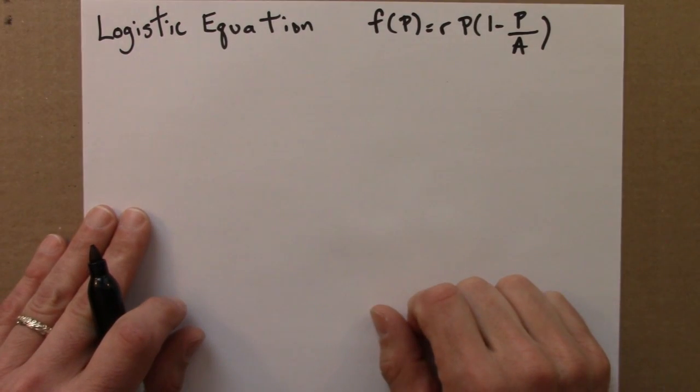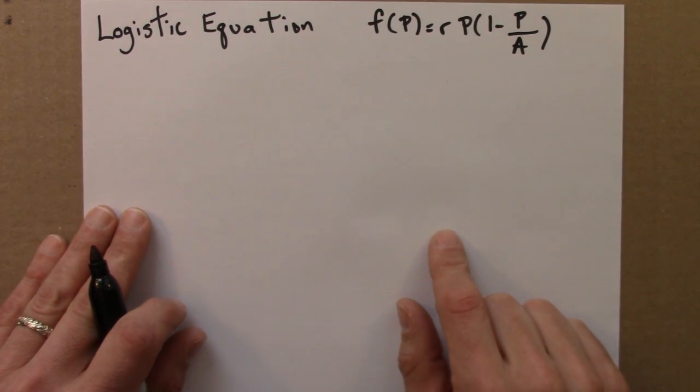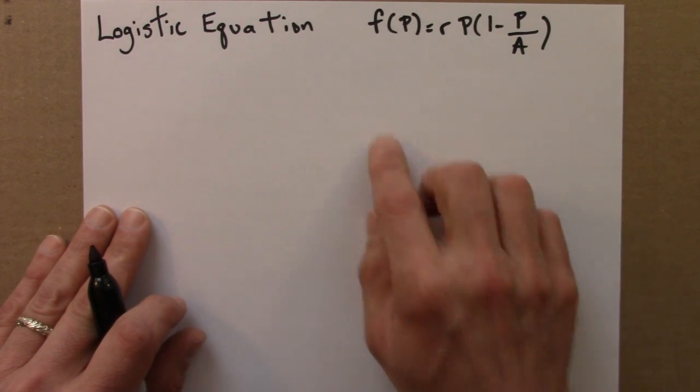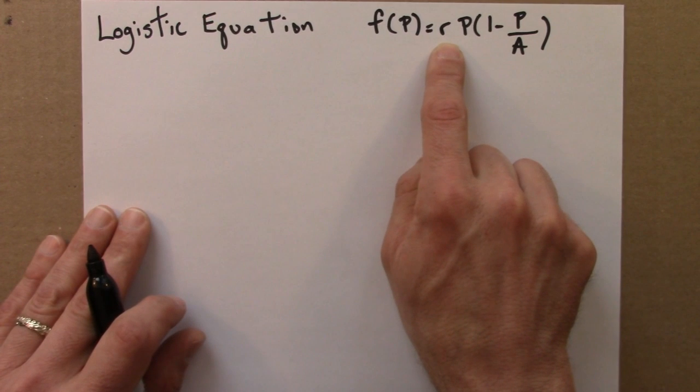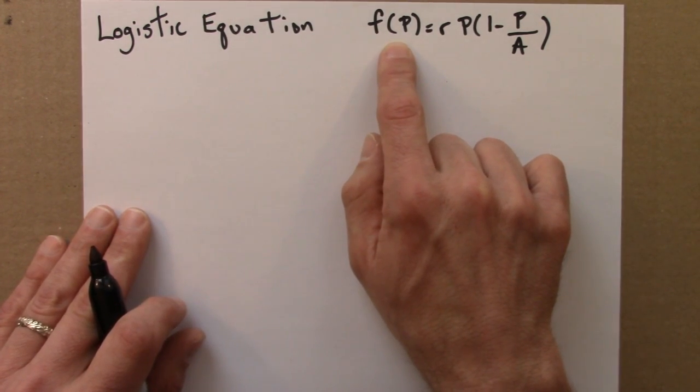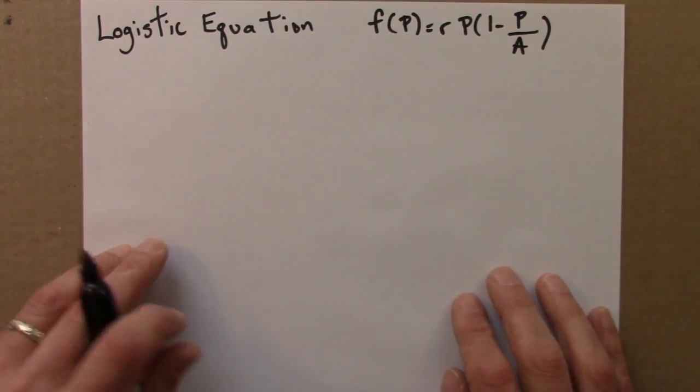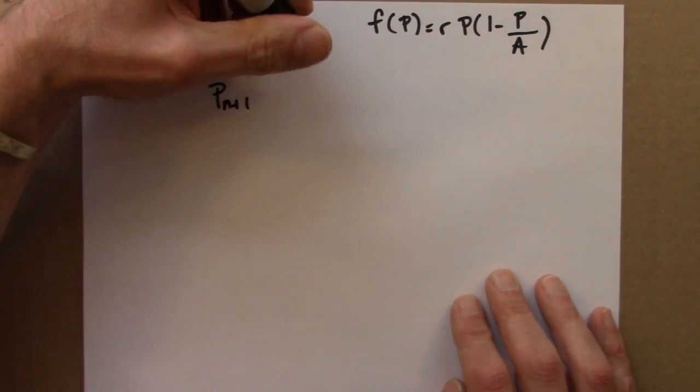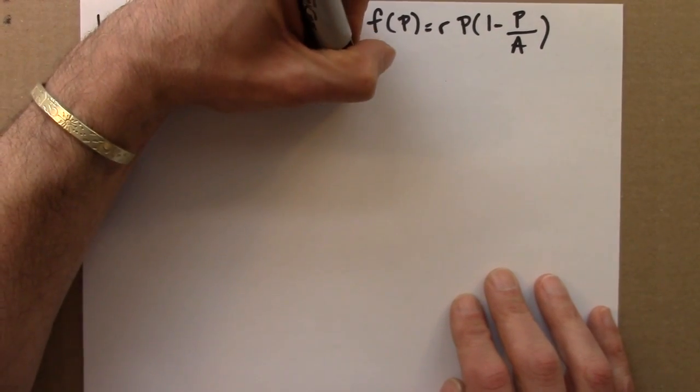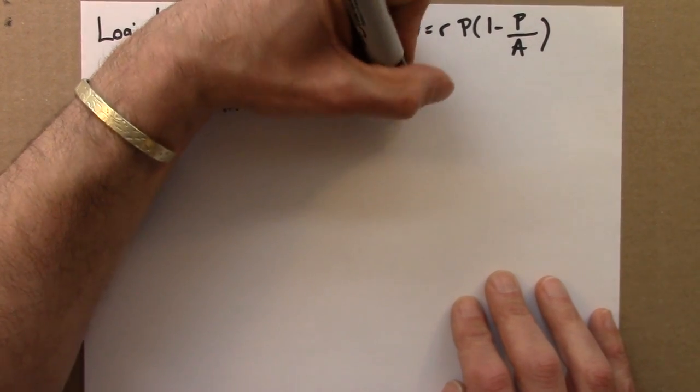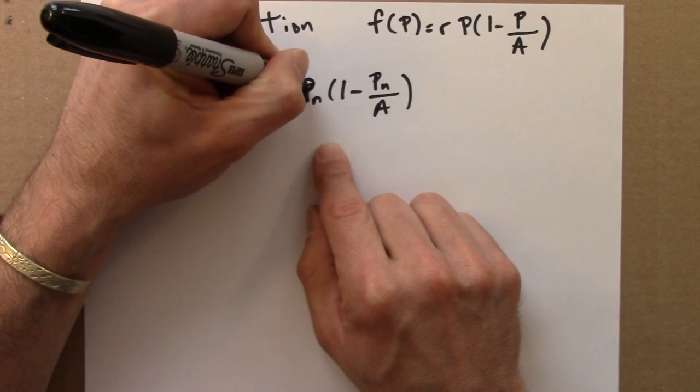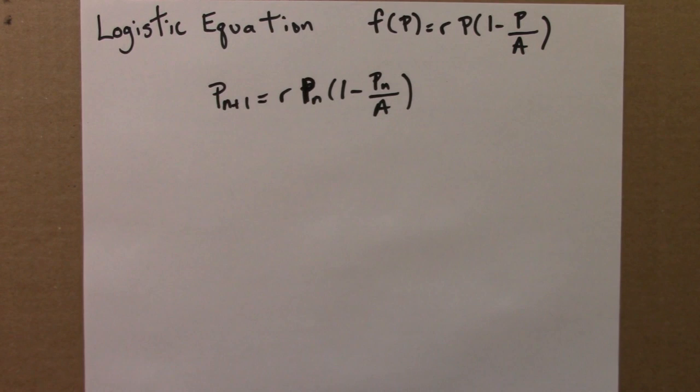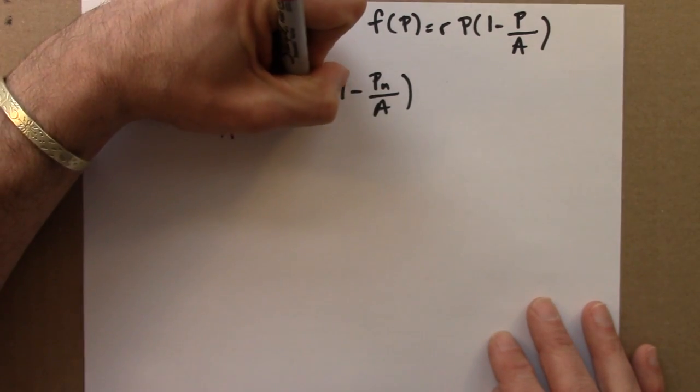I'll complete the derivation of the logistic equation by simplifying this equation a little bit and putting it in a slightly different and more standard and I think more general form. So here's the logistic equation, rp times 1 minus p over a. a is the annihilation population and r is a growth parameter. And this tells me the population next year if I know the population this year. So let me write that in a slightly different way. p n plus 1, the population next year is r times p n times 1 minus p n over a. So to simplify things a little bit, I'm going to divide both sides of the equation by a.